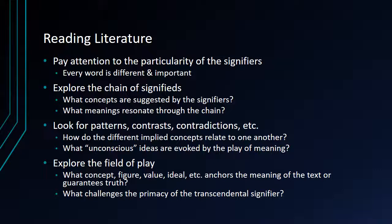So some tips on reading literature. First, you want to pay attention to the particularity of the signifiers. The specific word chosen is chosen for a reason — every word is different and every word is important; they're not just synonyms with one another. Explore the chain of signifieds: what concepts are suggested by the signifiers and what meanings resonate through the chain? Think about the chain of signifieds as like a web of meaning — when you pluck any one word, it resonates, it vibrates, and other concepts will chime out and suggest themselves. So what other concepts or meanings might resonate through the chain when you examine one signifier and signified and see what ideas it contains?